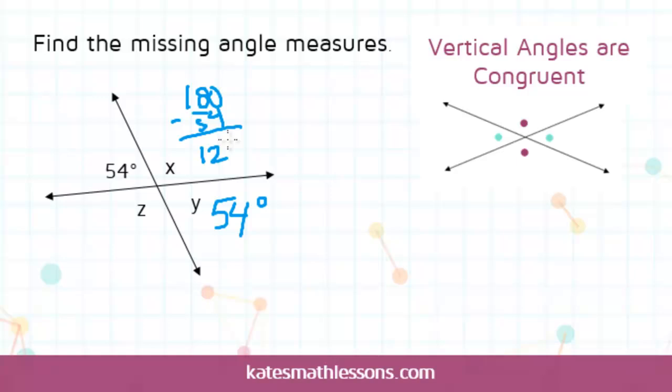So we know that the angle that's marked with the x is 126 degrees. And then x and z are vertical angles, so that means that z is also 126 degrees.